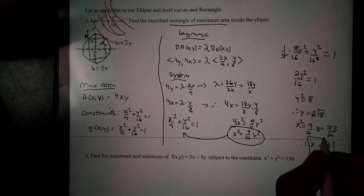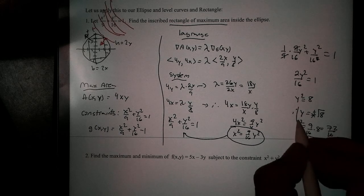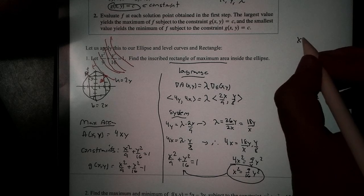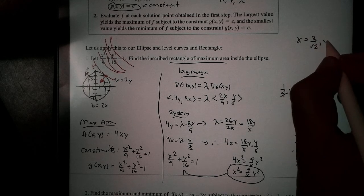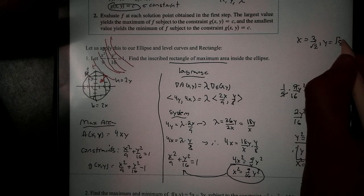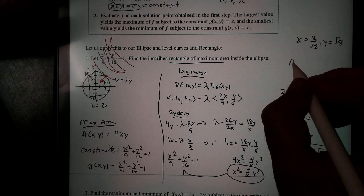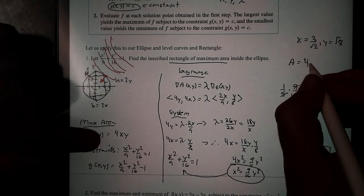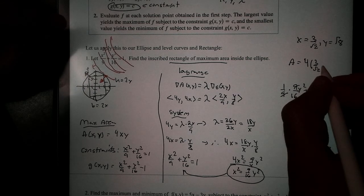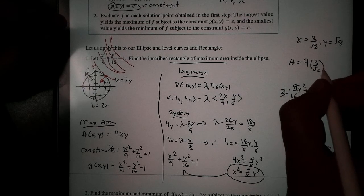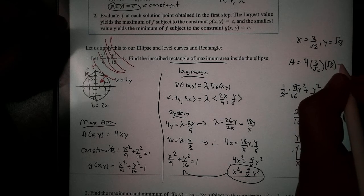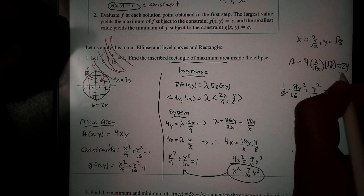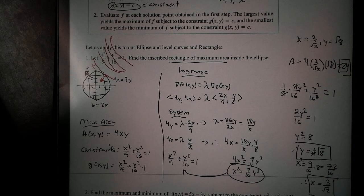I'm just going to solve that real quickly for you. So we have x and we have our y value. So let's see here. So we have x equals 3 over root 2, y equals the square root of 8. If I want to find the area now, I can now find the area of the maximum one, which is going to be 4. Remember, we said it's 4 times x, 3 over root 2, times the square root of 8. You can leave it like that, or if you reduce it, you're going to get 24 square units. And that would be the maximum area right there.